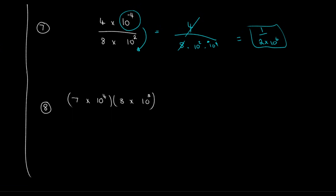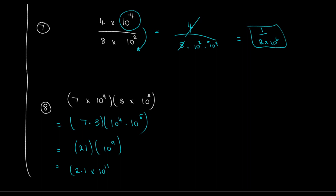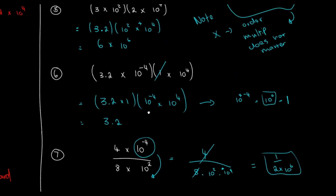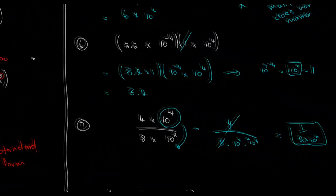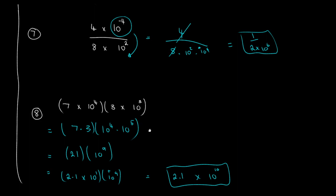For the last one, I rearrange as 7 × 3 × 10⁴ × 10⁵, which gives 21 × 10⁹. I rewrite 21 as 2.1 × 10¹, then multiply by 10⁹: adding exponents gives 2.1 × 10¹⁰ as the final answer. Those were some examples of scientific notation. It might get a little more complicated, but if you know your exponential rules, it becomes fairly easy. Good luck!